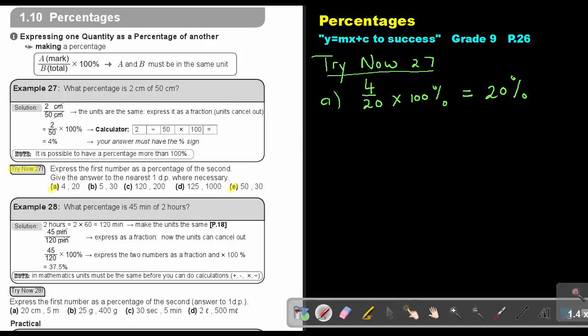If I look at number E, it's the first one out of the second one. So you must put the 50 on top. And if you multiply it with 100%, you will get 166.7%. Can you remember what I said? It is possible to have a percentage more than 100%.